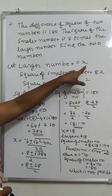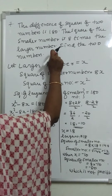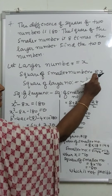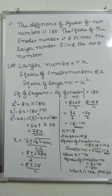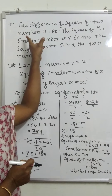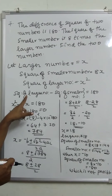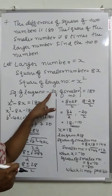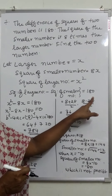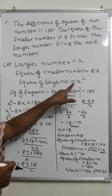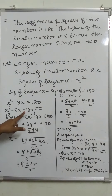Let the larger number be equal to x. Then the square of the smaller number is equal to 8 times the larger number, that is 8 into x. The square of the larger number is x squared. Given that the difference of the squares is 180: x squared minus 8x is equal to 180.